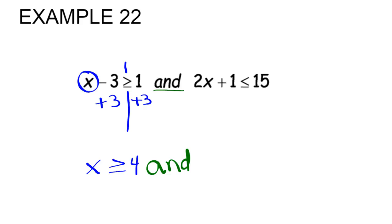On our right-hand side, we're going to isolate the variable by first subtracting the constant 1 from both sides. That's going to give us 2x is less than or equal to 14.